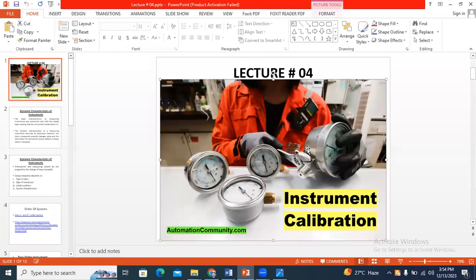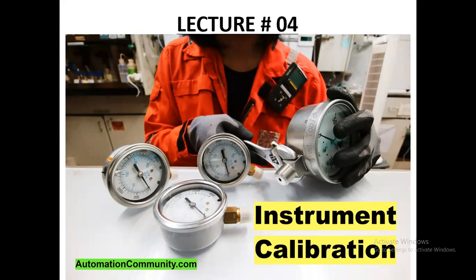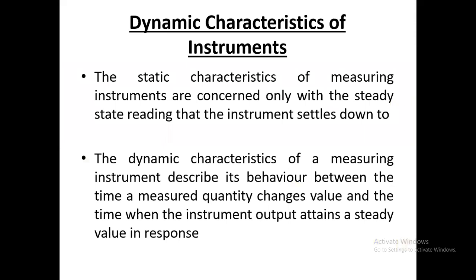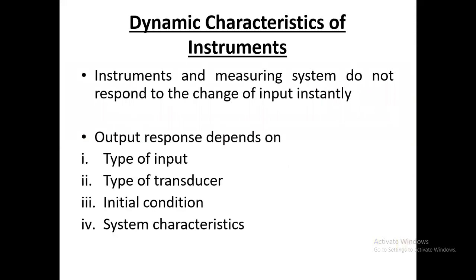We continue from lecture number four, where we already discussed some slides in the previous session regarding instrumentation calibration. Calibration is an important aspect to regulate and set the instrument as per user needs. Without calibration we cannot get the exact, accurate value required for measuring instruments. We also discussed the dynamic characteristics of the instrument and the output response, which depends on the type of input, type of transducer, initial conditions, and system characteristics.